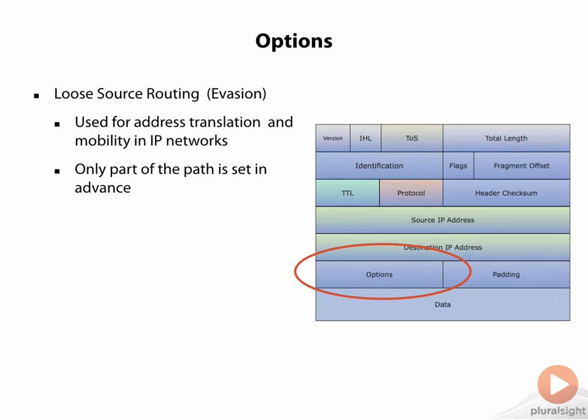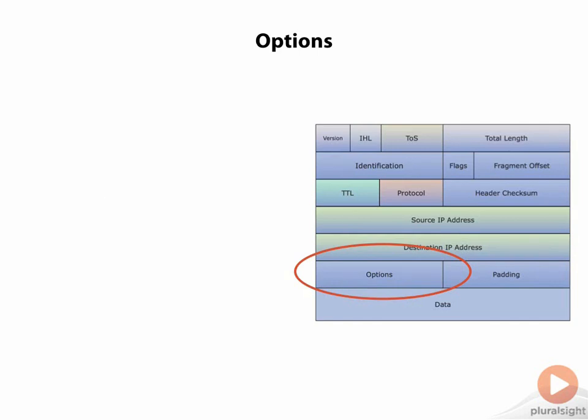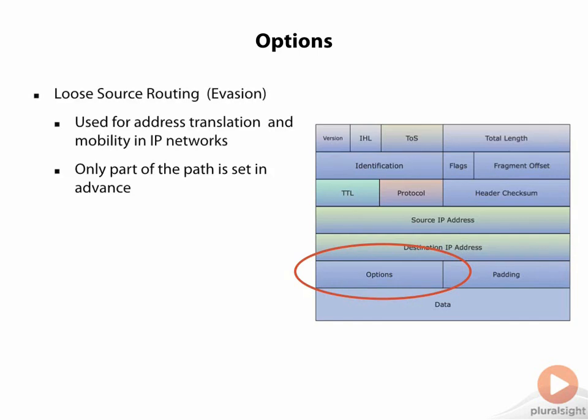Within this packet, we can use loose source routing to say, I want you to take this path. Only part of the path is set in advance, but it is a partial route list that tells what way we want to take.